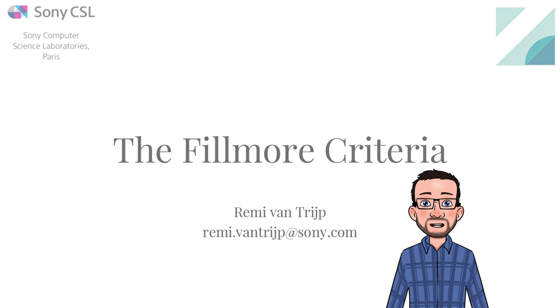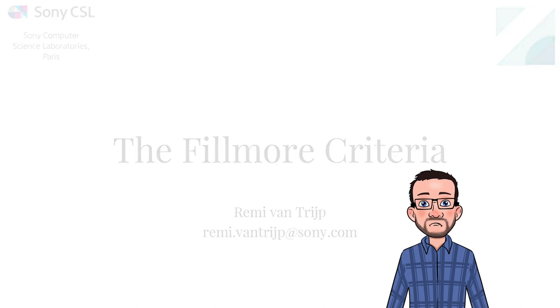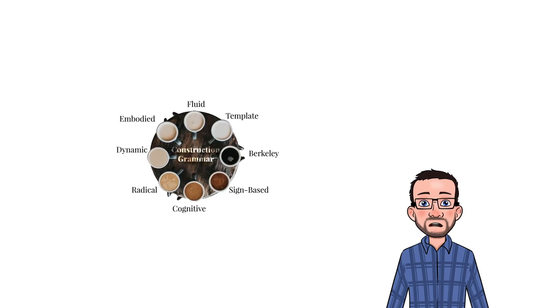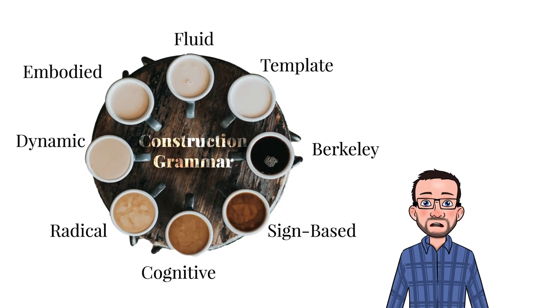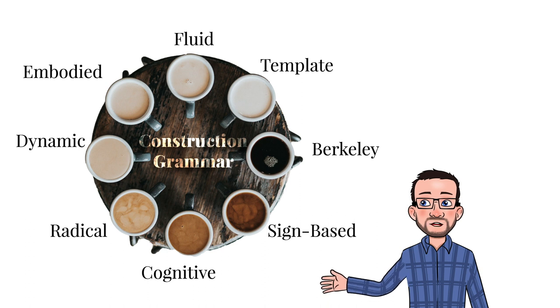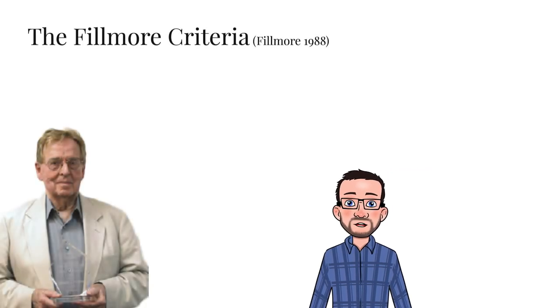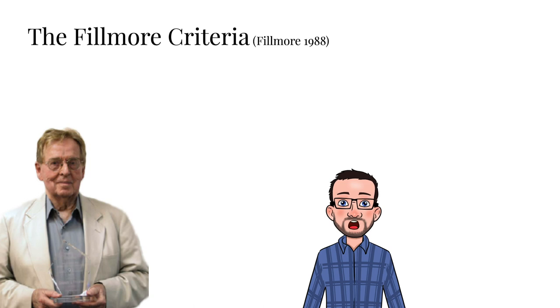From the first two introduction videos, you might have gotten the impression that construction grammar is a well-defined approach to the study of language. In reality, however, the construction grammar community is quite diverse, and many different flavors of construction grammar exist, which makes it difficult for newcomers to enter the field. Construction grammarians often signal their flavor by adding a word in front of construction grammar, such as radical construction grammar, cognitive construction grammar, or sign-based construction grammar. In order to make sense of all these different approaches, I selected four criteria from a brilliant paper that Charles Fillmore presented in 1988 at the Berkeley Linguistic Society: The Mechanisms of Construction Grammar.